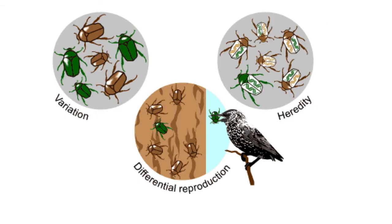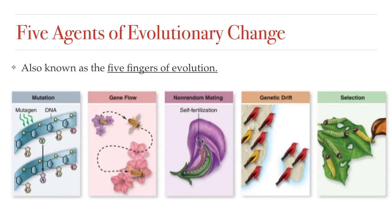So so far, we've focused quite a bit on Darwin's theory of evolution by means of natural selection, which is still viewed as the primary mechanism by which change in allele frequency can happen. But it is important to note that this is not the only cause for a change in allele frequencies in a population. There are actually five different mechanisms, or ways by which the gene pool changes, that lead to evolution of a population. These five agents of evolutionary change are sometimes called the five fingers of evolution.